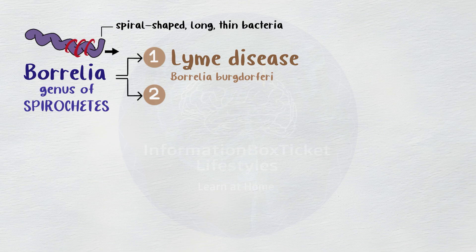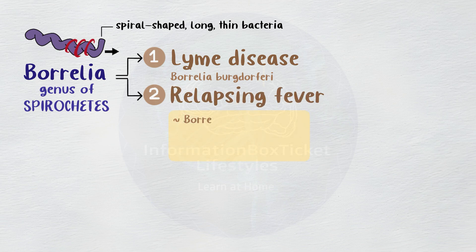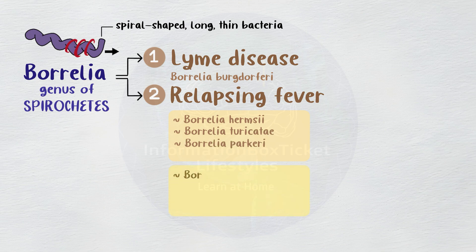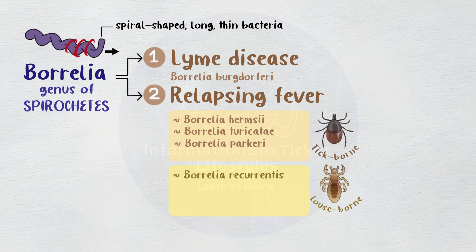The most prevalent species in the second category, which is linked to relapsing fever, are Borrelia hermsii, Borrelia turicatae, Borrelia parkeri, and Borrelia recurrentis. Of the second group, Borrelia recurrentis causes louse-borne relapsing fever, whereas the first three species cause relapsing fever spread by ticks.